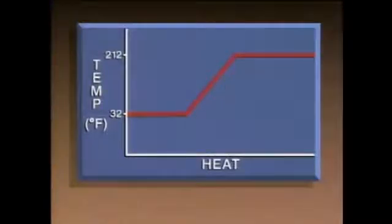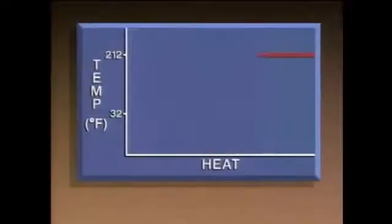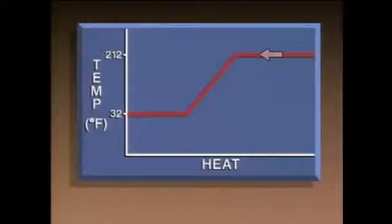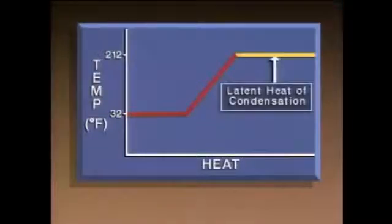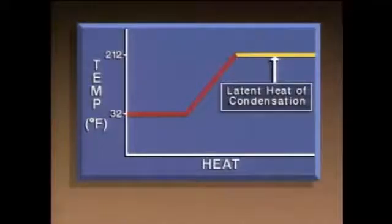If heat is removed, the heat transfer line moves in the opposite direction. When heat is removed from steam, the steam starts to condense into water. Under these conditions, heat is removed from steam and the steam condenses rather than vaporizes. This line represents the latent heat of condensation — the amount of heat that has to be removed from a substance to condense it without producing a change in temperature or pressure.